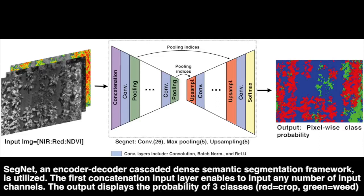This network consists of 26 convolution layers followed by ReLU activation and five max pooling for the encoder, and five upsampling for the decoder linked with pooling indices. The modifications we made are twofold: first, the frequency of appearance for each class is adapted based on our training data set for better class balancing; second, we add an input layer to concatenate any number of input channels. The network output on the right shows the pixel-wise class probability in different colors — blue corresponds to the background, and red and green represent crop and weed, respectively.